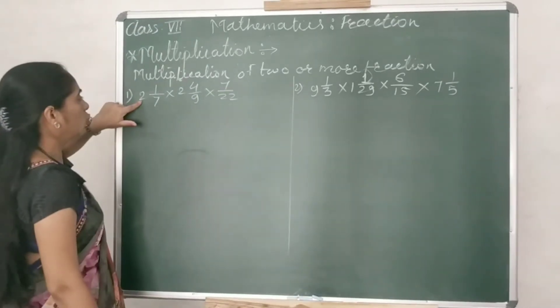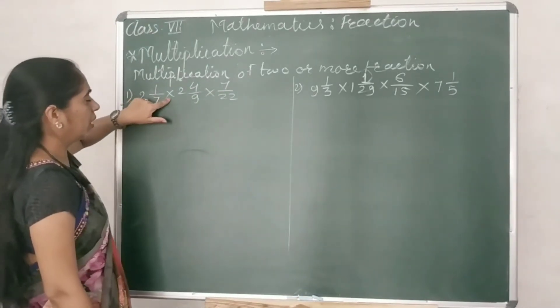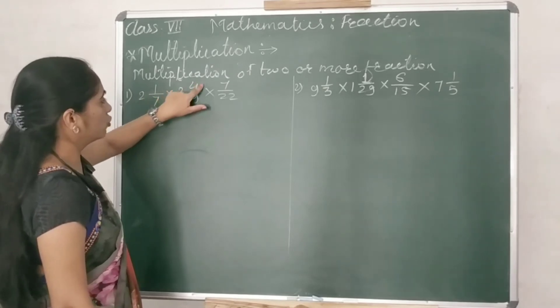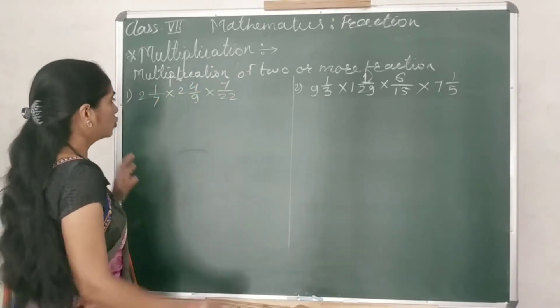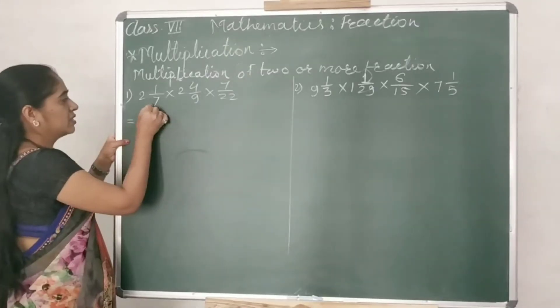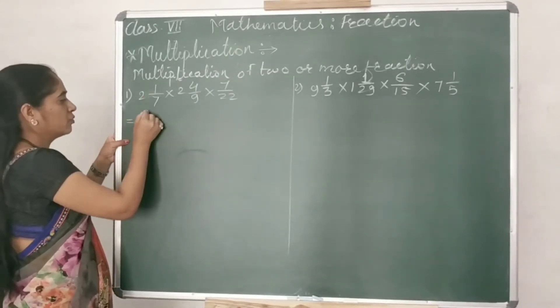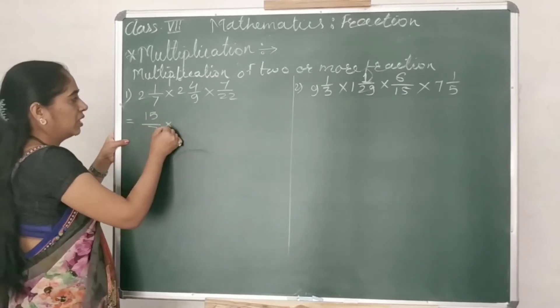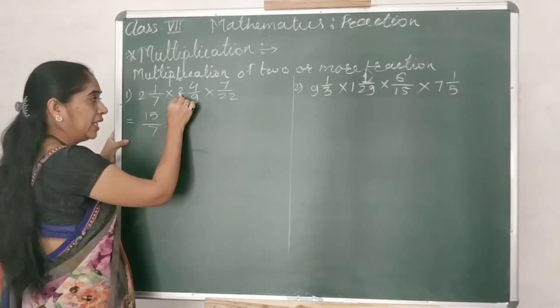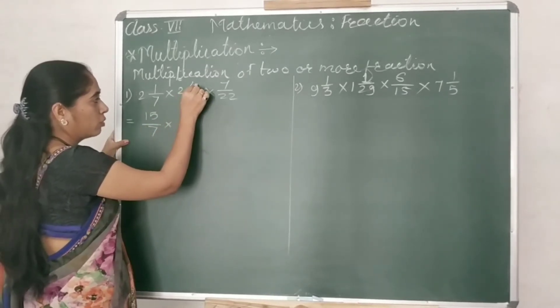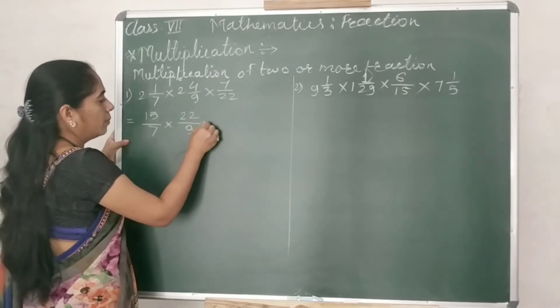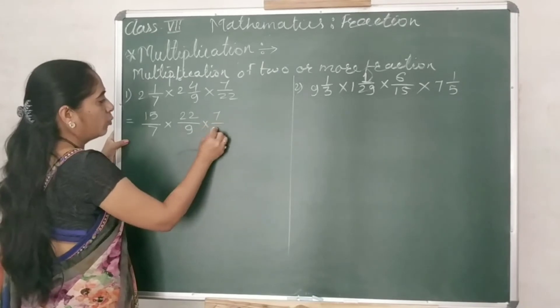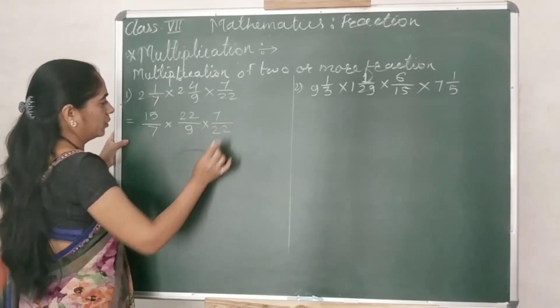You have given 2 integer 1 upon 7 multiplied by 2 integer 4 upon 9 multiplied by 7 upon 22. So we will solve this first. 7 to the 14 plus 1, 15 upon 7 multiplied by 9 to the 18, 18 plus 4, 22 upon 9 multiplied by 7 upon 22.